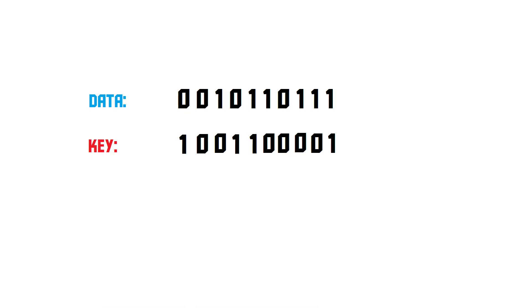In this case, 10 bits. So we now have our data or our message which is 10 bits, and we have our key that is the same size, and this key is supposed to be completely random. This also means that if our message would be 1 gigabit in size, our key would also be 1 gigabit in size. So the key is always as long as the actual data that needs to be encrypted.